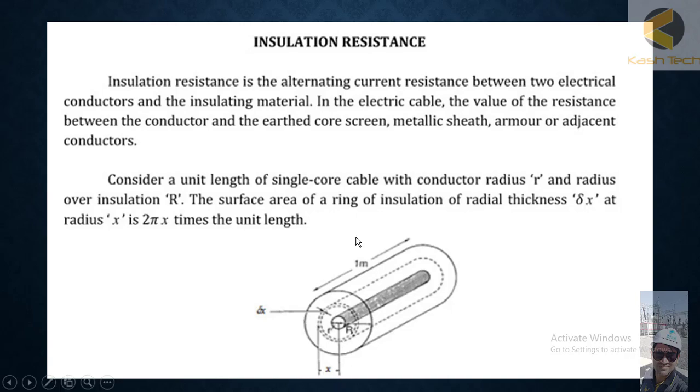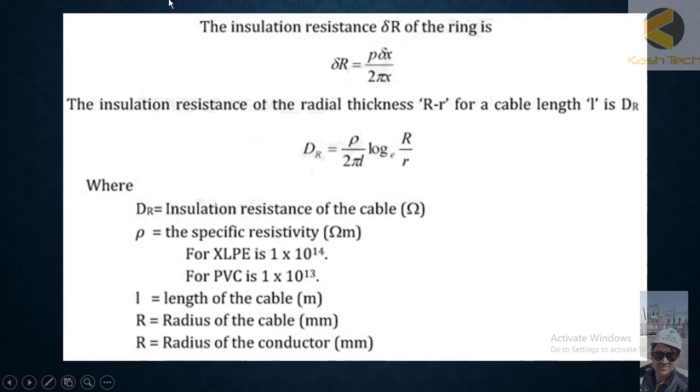The insulation resistance delta R of the ring is delta R equals ρ delta x divided by 2π x. The insulating resistance of radial thickness R minus r, capital R minus small r, for cable length l is DR.